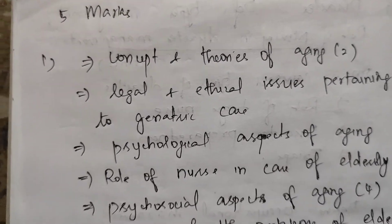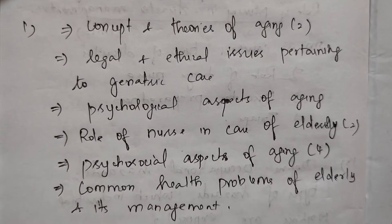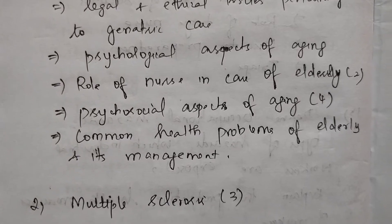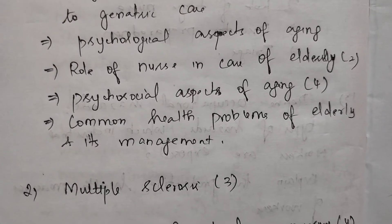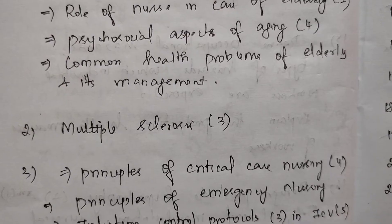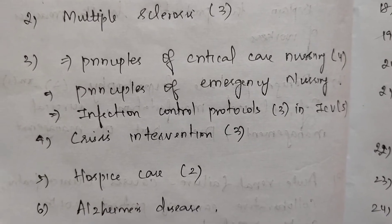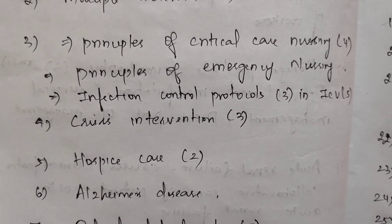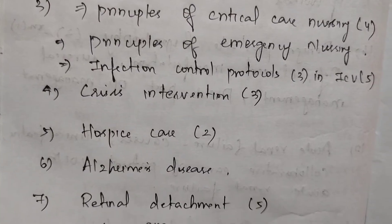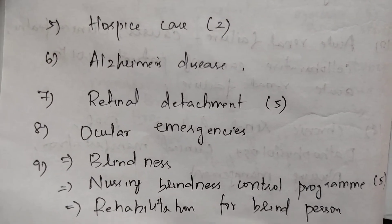Next, adult nursing and geriatric care related topics: concept and theories of ageing two times, legal and ethical issues pertaining to geriatric care, psychological aspects of ageing, role of nurse in care of elderly two times, psychosocial aspects of ageing four times, common health problems of elderly and its management. Next, multiple sclerosis three times, principles of critical care nursing four times, principles of emergency nursing, infection control protocols three times, infection control protocols in ICU five times overall. Crisis intervention three times, hospice care two times, Alzheimer's disease, retinal detachment five times.